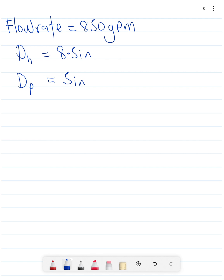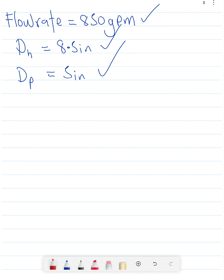Look at our parameters here: flow rate is 850 gallons per minute, your hole size is 8.5 inches, your pipe size is 5 inches. Using the first equation, annular velocity is going to be equal to...